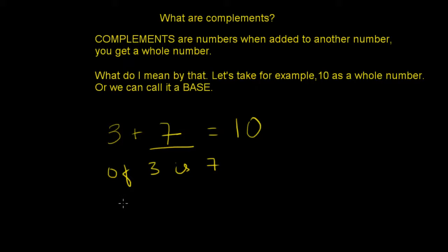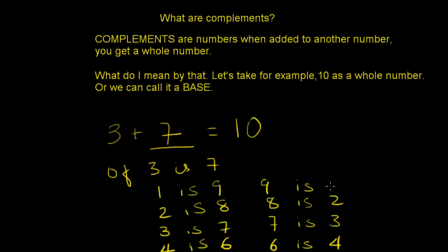So likewise, within 10, we have multiple options. A complement of 1 is 9, 2 is 8, 3 is 7, 4 is 6. And likewise, if we go and reverse, 6 is 4, 7 is 3, 8 is 2, 9 is 1.